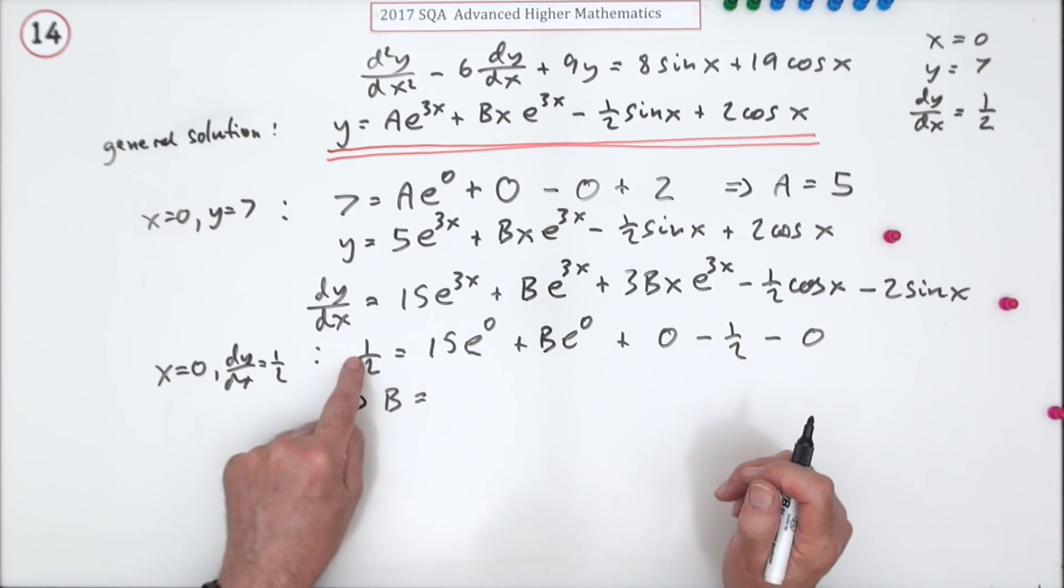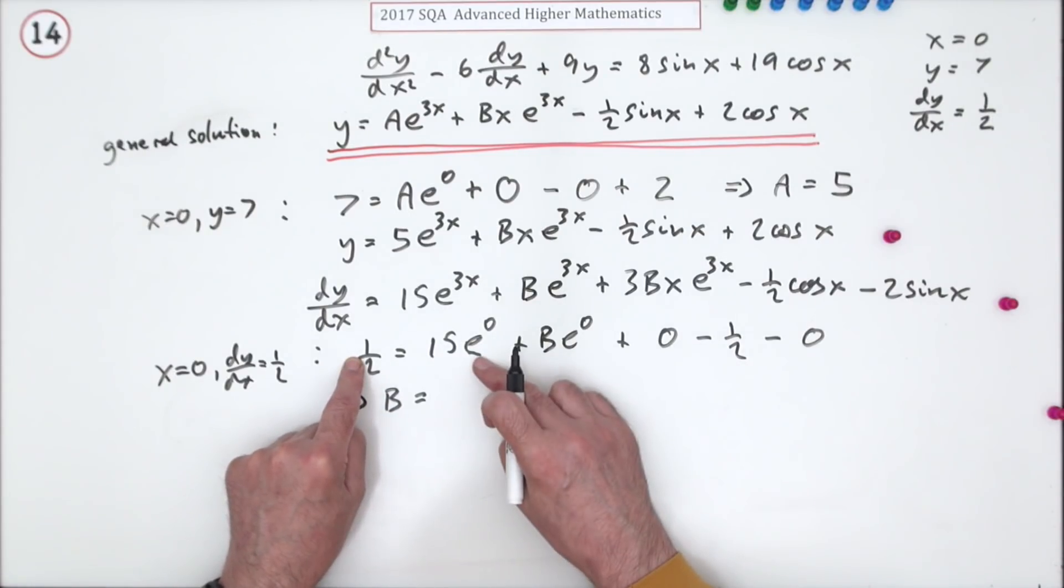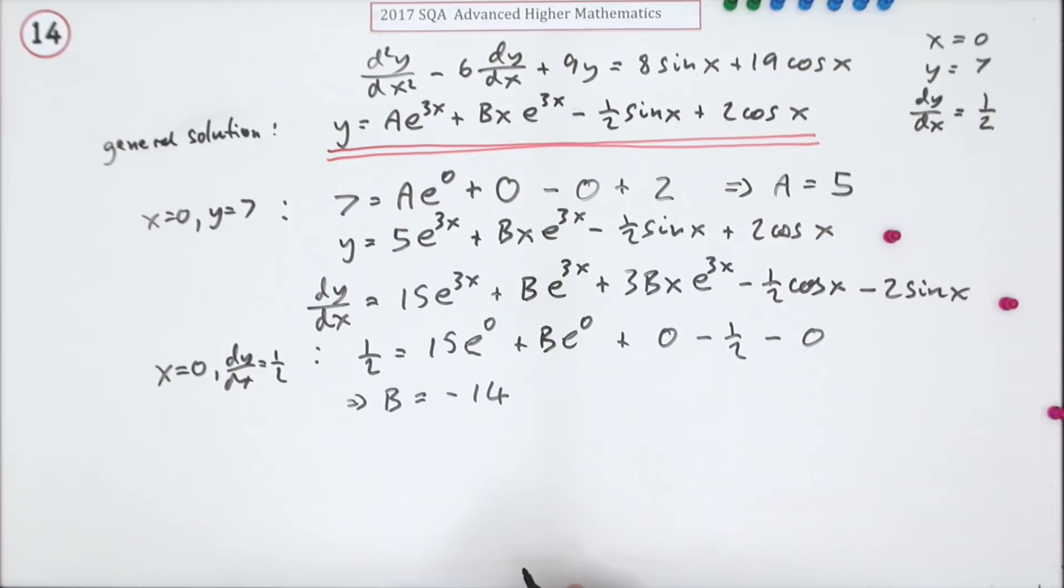I'll put it over here, so B is equal to - just bring everything over to the other side. The half goes over to make 1, e^0 is 1, 15 goes across and subtracts from the 1 to make a negative 14. So the last mark is for finding this and then just writing it all out.